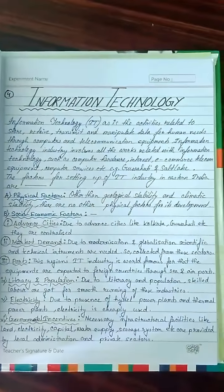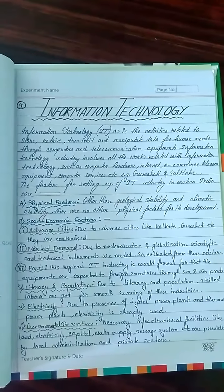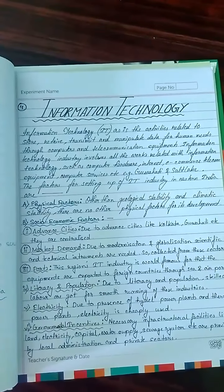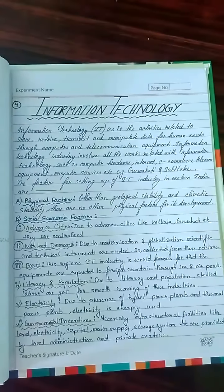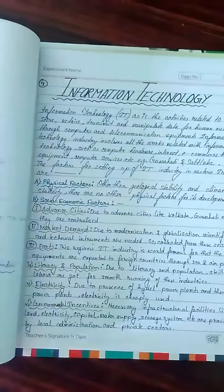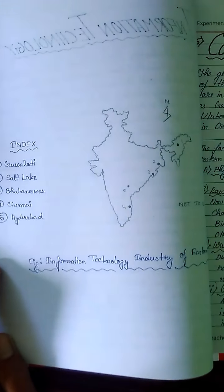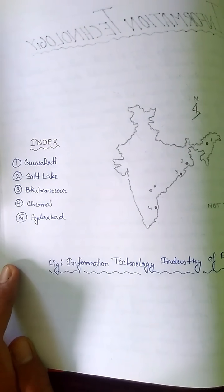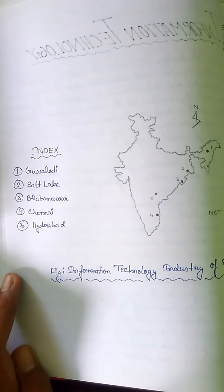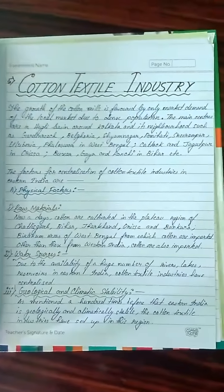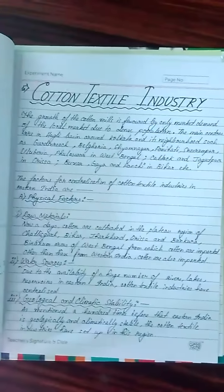Next is the information technology industry. India's information technology sector is worldwide famous and represents the most modern technology. The factors are also divided into physical and socio-economic factors. The information technology industry centers shown include Guwahati, Salt Lake, Bhubaneswar, Chennai, and Hyderabad. The cotton textile industry mainly flourishes in western India, but some centers are also found in eastern India.